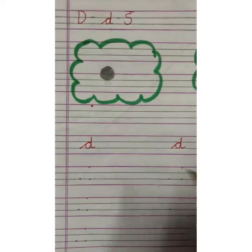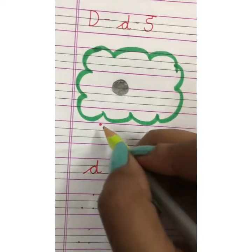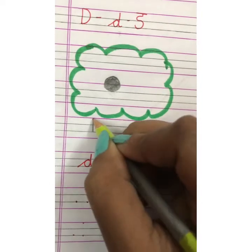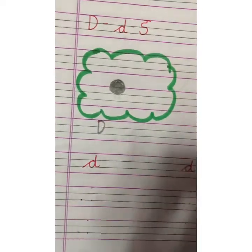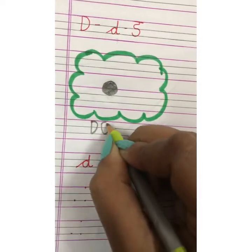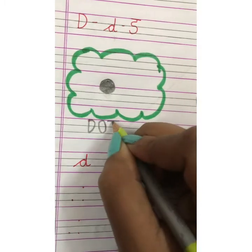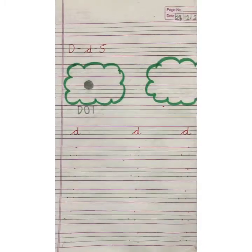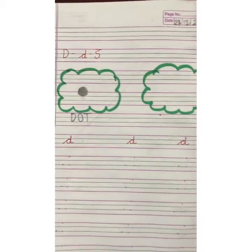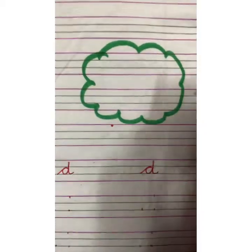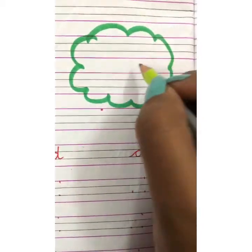Now, you have to write D, O, T. Dot. And in this cloud, we will draw drum. How to make drum?